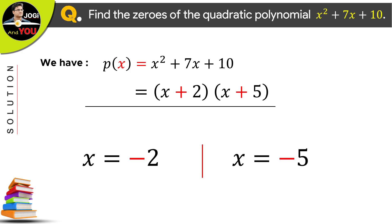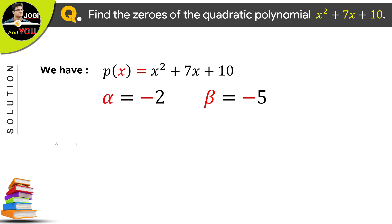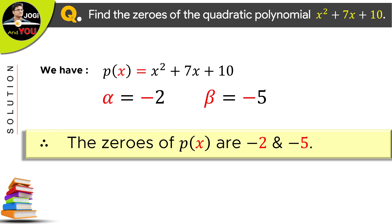And we know that the zeros of any polynomial are represented by alpha and beta. So, the zeros of the given quadratic polynomial are minus 2 and minus 5. Which is also the value of x. And this is what we had to extract from the given algebraic expression.